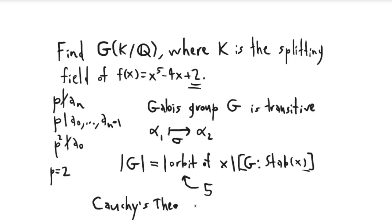Cauchy's theorem tells you that there's an element of G of order 5. Because whenever the order of G is divisible by a prime, G contains an element that has that same order. But G is contained in S5. So G is living inside of S5. And the only elements of S5 that have order 5 are 5 cycles.